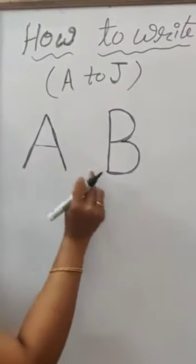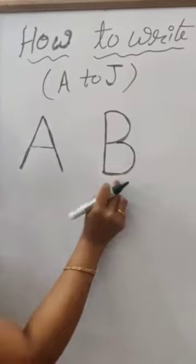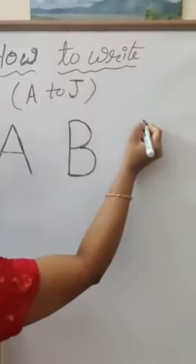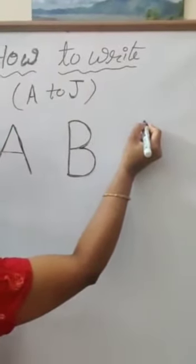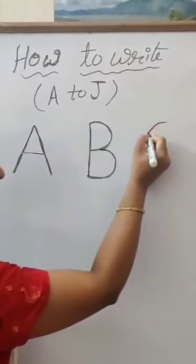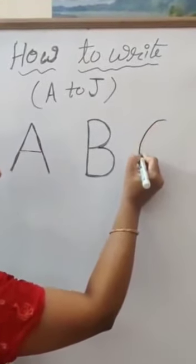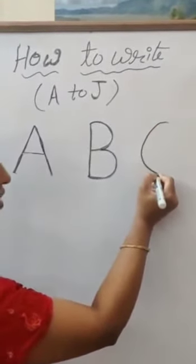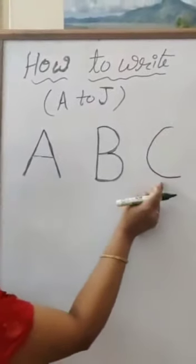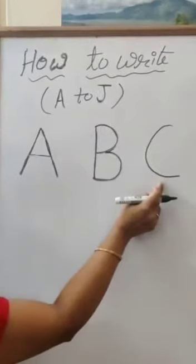A, B, and next letter is C. C for cat. Very simple — only one curve or half circle which makes C.